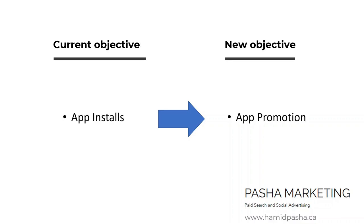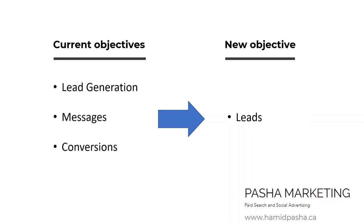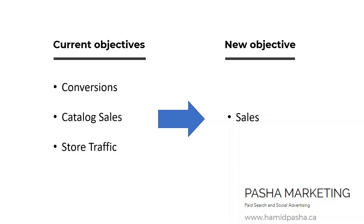App installs will be renamed as app promotion. Lead generation, messages, and conversions will be incorporated into the leads objective. And finally, conversions, catalog sales, and store traffic will be incorporated into the sales objective.